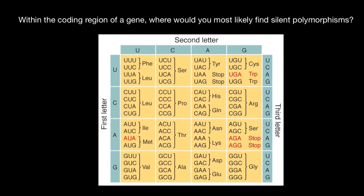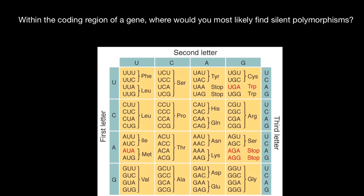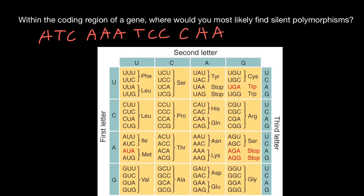A codon is a sequence of trinucleotide that specifies a certain amino acid. For example, imagine we have a certain sequence: A, T, C, A, A, T, C, C, C, A, A, T, T, G, A, G, G, and so on. We have a sequence, and here each codon specifies a certain amino acid.